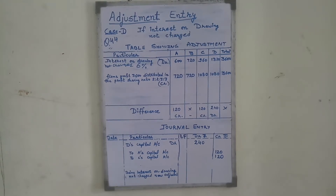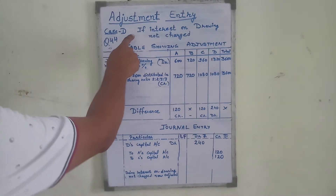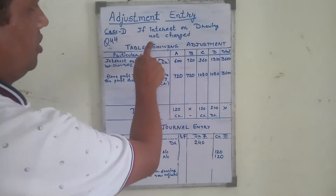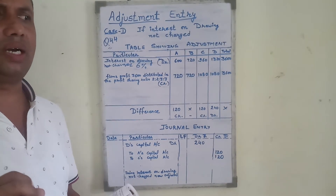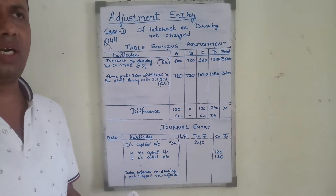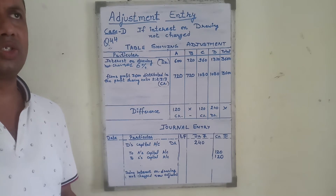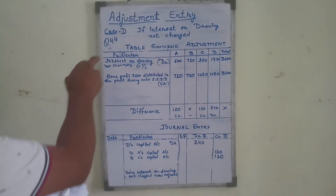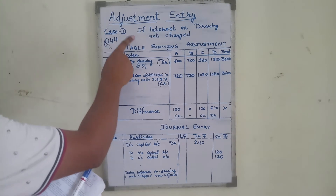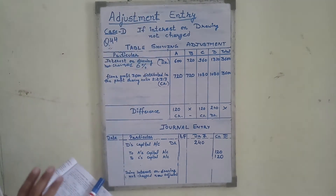We are starting question 44 — cases when interest on drawings is not charged. When interest on drawings is not charged, it means when we are preparing a Profit and Loss Appropriation Account, the interest on drawings has been omitted. This is question number 44, chapter 1, adjustment entry.